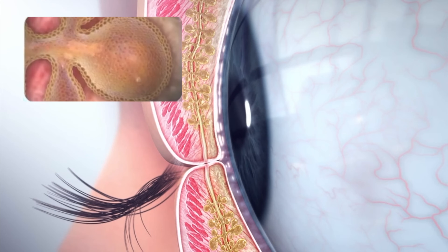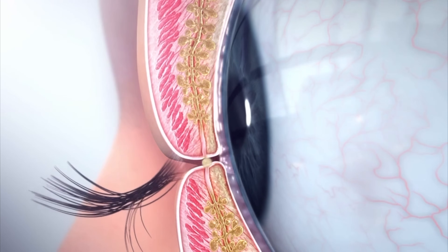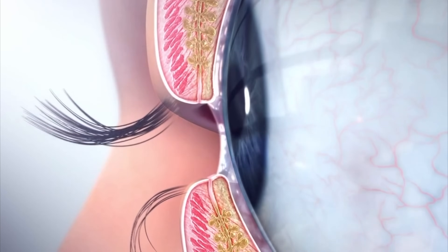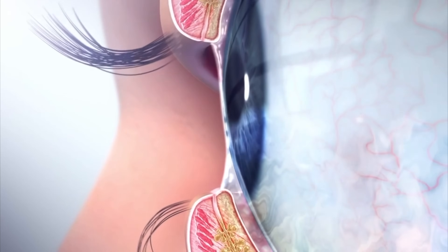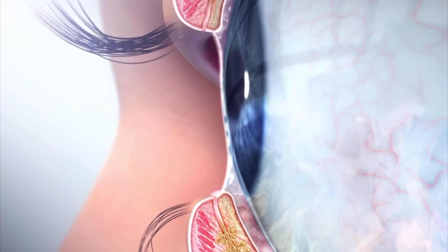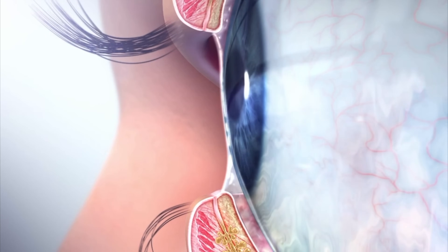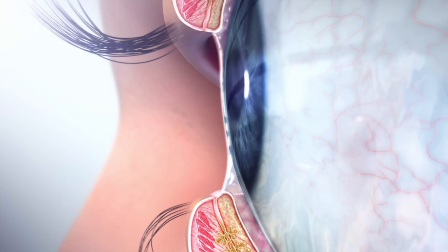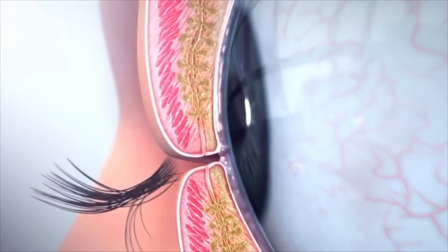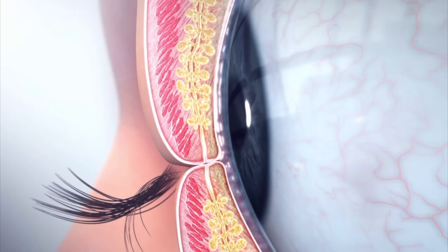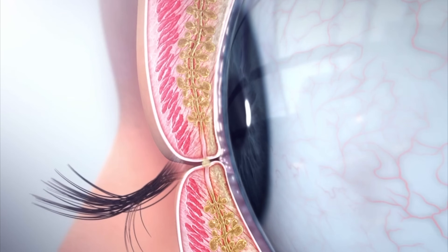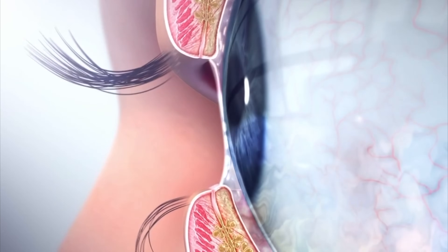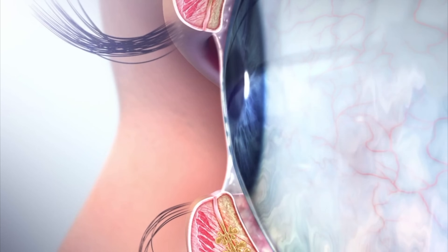When you blink, the eyelid's touch and pressure is applied to the meibomian glands, causing them to eject small amounts of oil into the tears. The upper eyelid then pulls the oil upward over the eye. As the lid opens fully, the oil disperses evenly over the entire eye surface. The oil stabilizes the tear film evenly as well as prevents the aqueous layer from evaporating rapidly, and also increases lubrication and comfort.